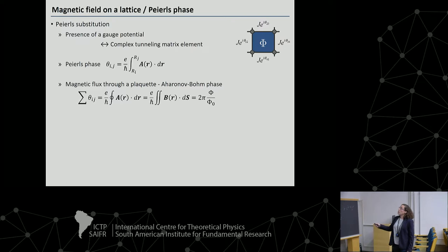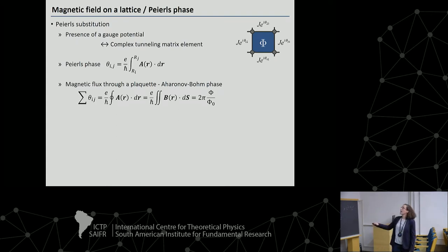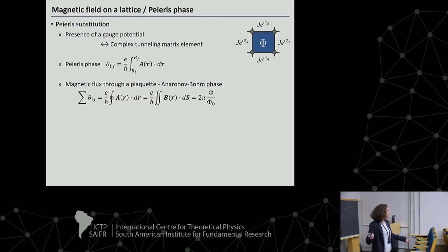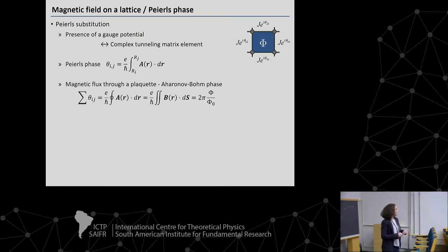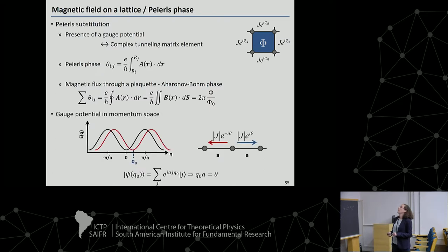If you think of a particle which goes a closed loop, all around the plaquette, the phase it will accumulate is simply the sum of all the theta, and again you get an integral of a closed path of your vector potential — magnetic flux — so this phase is simply the magnetic flux over the flux quantum. You recover this concept of the Aharonov-Bohm phase, and that's how we do it in the lab.